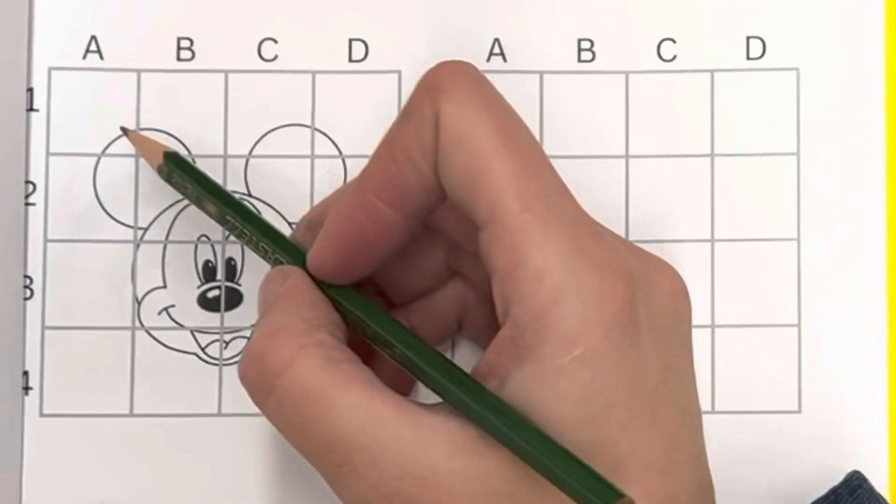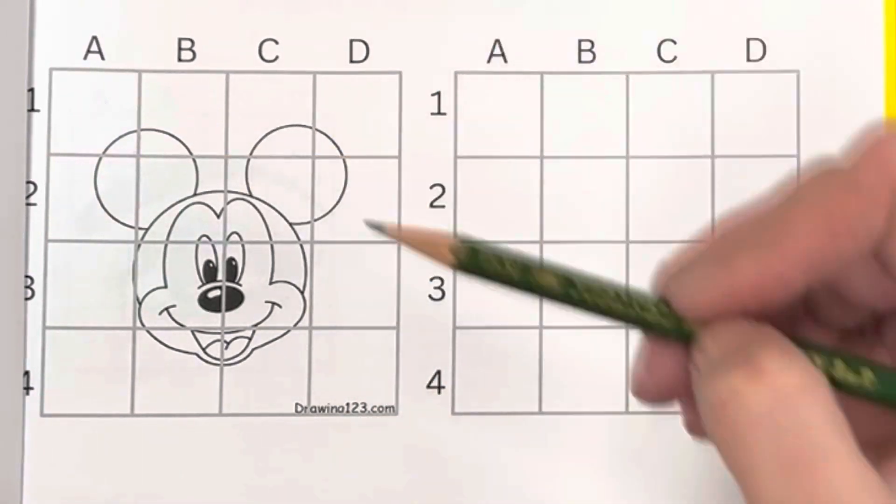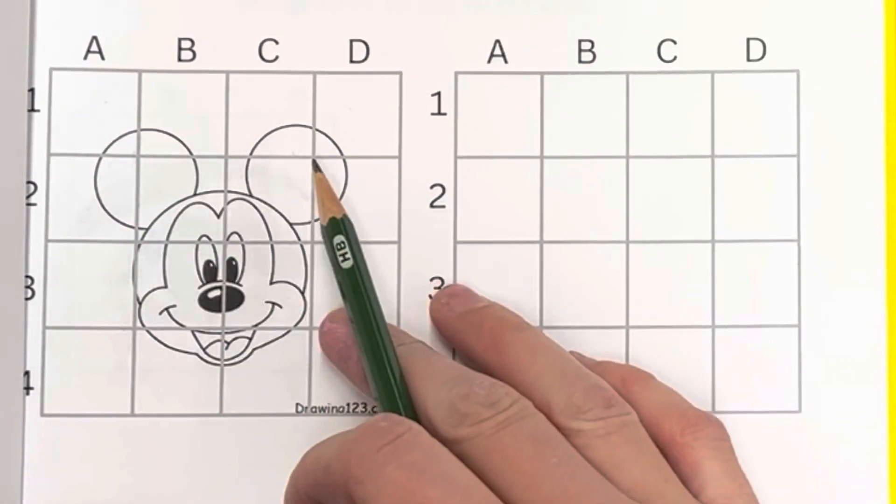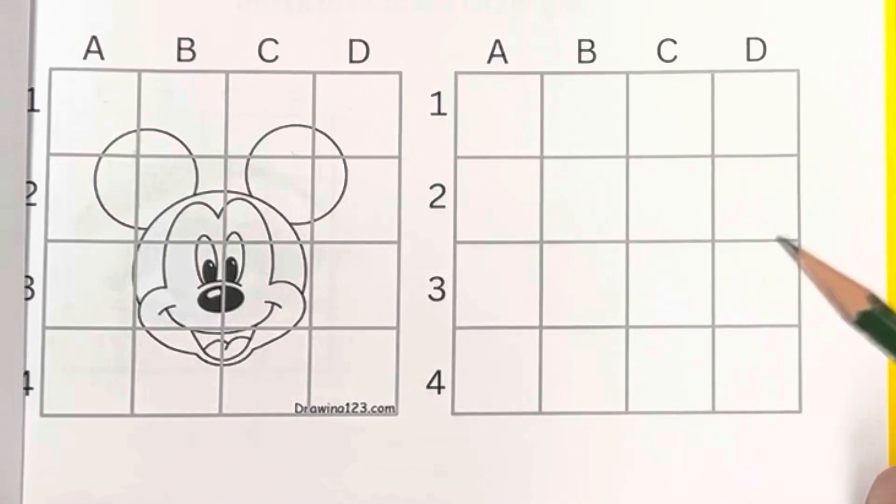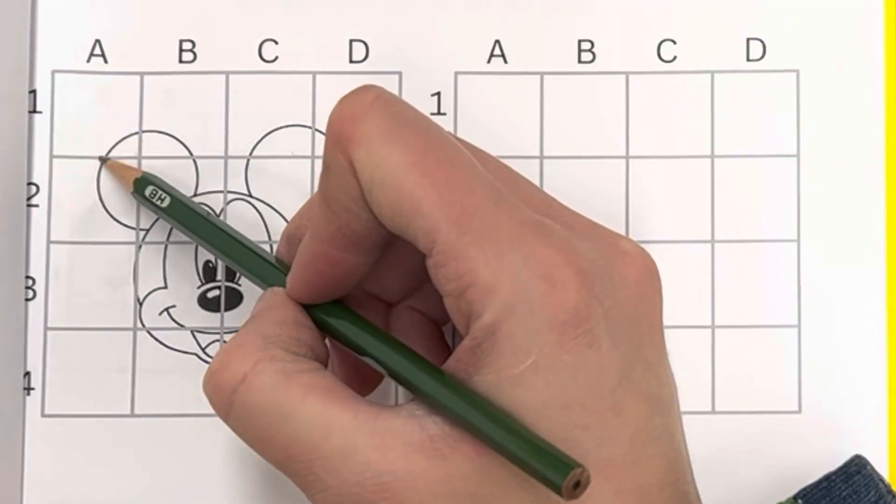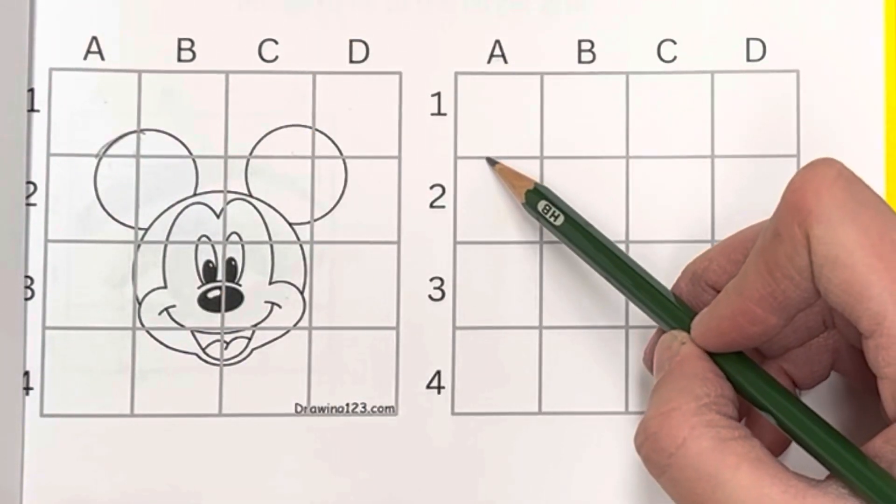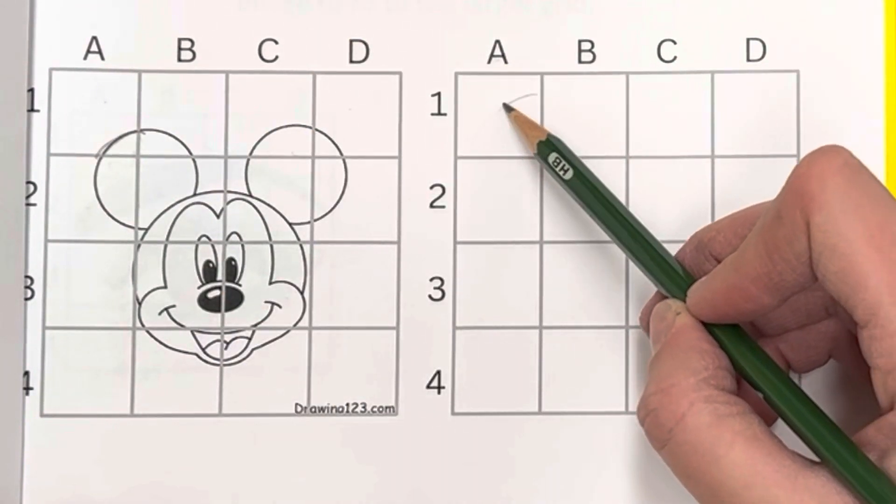And then what you do is go square by square or intersection by intersection to help guide you to draw your thing. So for Mickey, I would probably start with this ear, and I would see that this curved line starts in A1, square A1, and I would be like, is this the right curve?